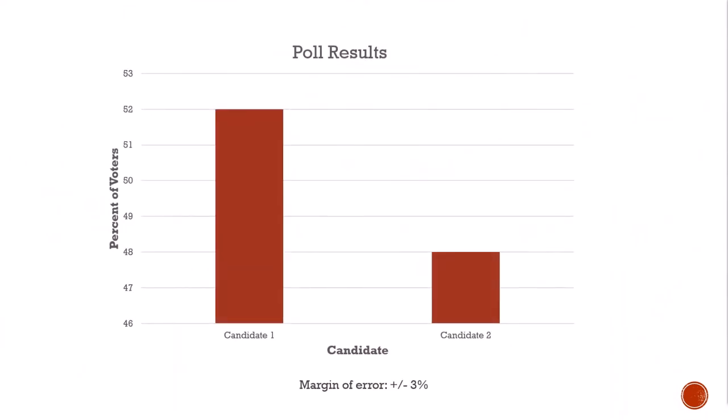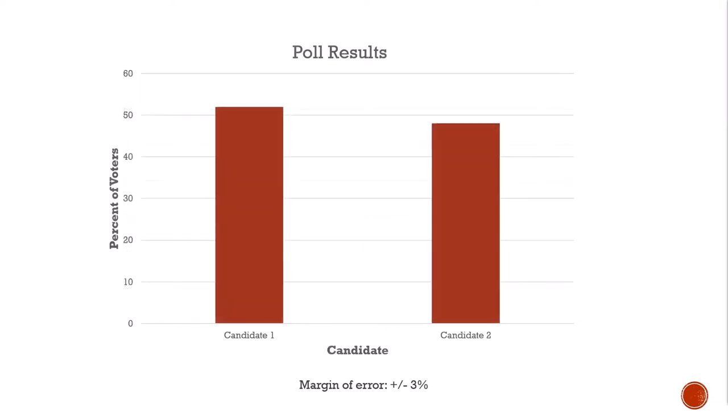A classic example involves truncating the y-axis on bar plots. At first glance, this bar plot seems to show a better than 2-to-1 advantage for candidate 1 over candidate 2. But if we start the y-axis at 0, we see the true relationship: a modest lead for candidate 1. Even this is misleading, however, for polls always have a built-in margin of error, often 3 points in either direction at 95% confidence.